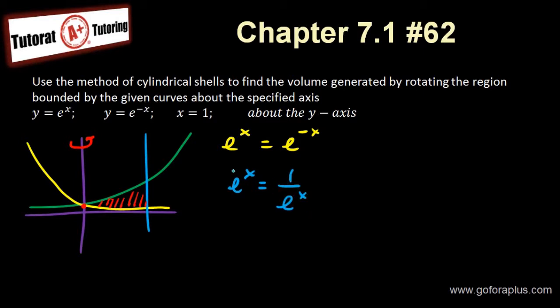If you multiply onto the other side, you get e to the 2x equals 1. That means x must be equal to 0. So therefore, you found your intersection from 0 to 1.